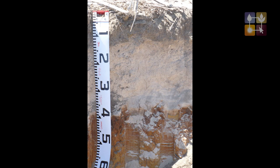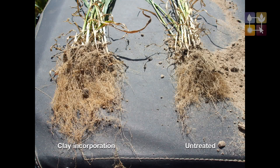The bleached horizon, the A2 horizon further down the profile, is caused by those horizons being subject to a high level of leaching which washes the nutrients and the organic matter out of that part of the soil profile. The result is a very low fertility zone within the soil profile, meaning that roots can't actually grow very deep — we get a shallow rooting depth on those soil types.